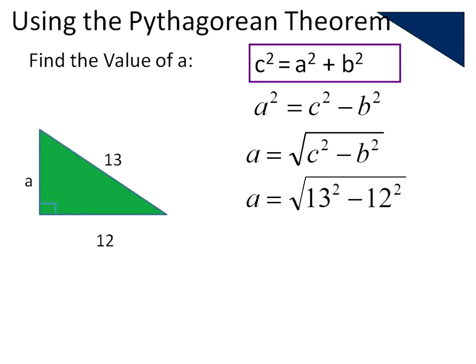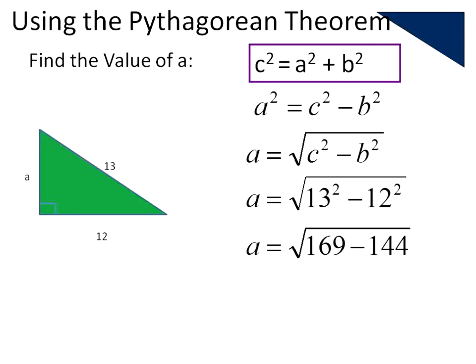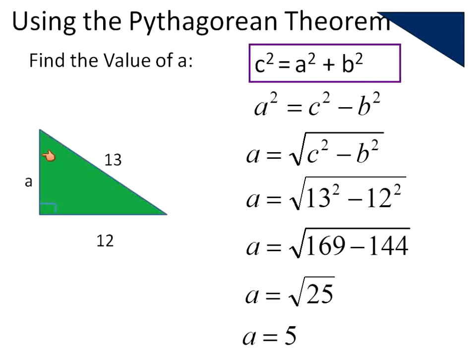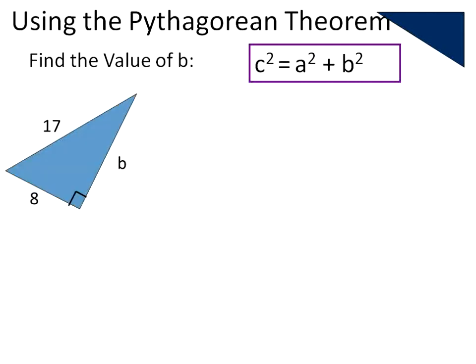All we need to do now is substitute in what we know. We know that C is equal to 13, so that will be 13 squared. And B is equal to 12, so that will be 12 squared. 13 squared is 169, 12 squared is 144. 169 minus 144 is 25. The square root of 25 is 5. The square root of 25 is actually plus or minus 5, but when we're measuring length, we discard the negative number — it's always going to be positive. So that is the Pythagorean Theorem at work when we're given the hypotenuse and one of our legs.